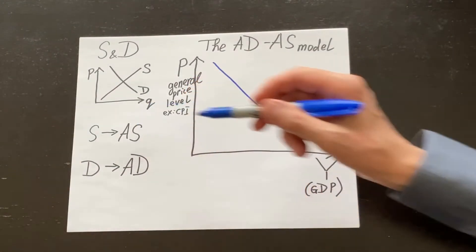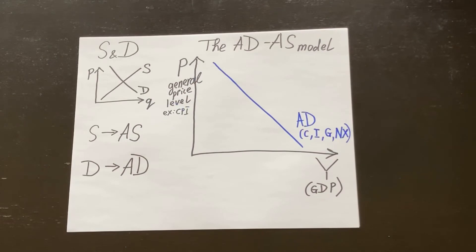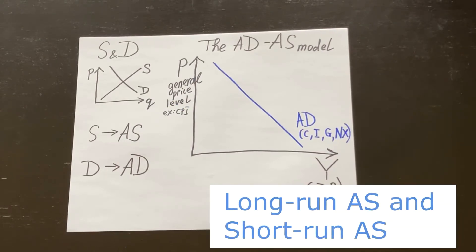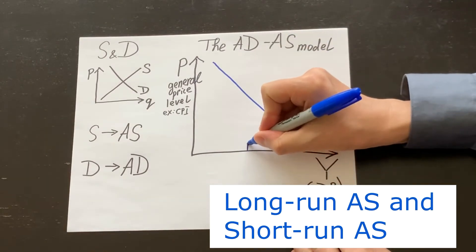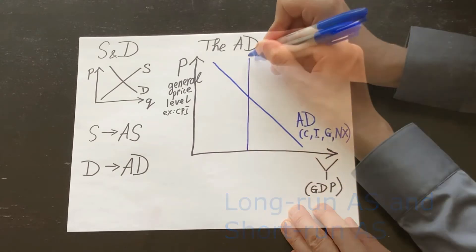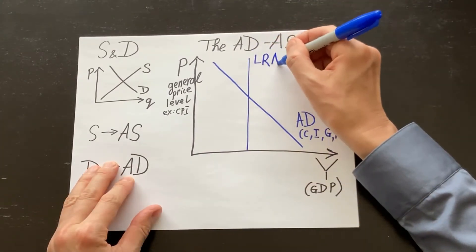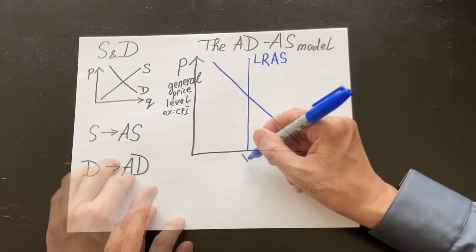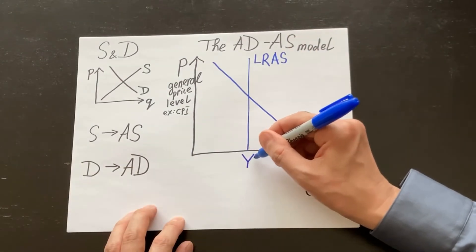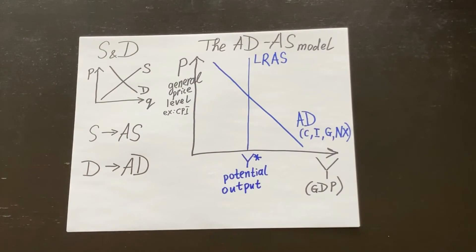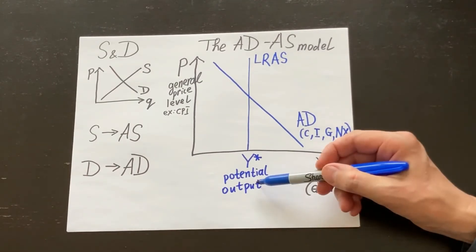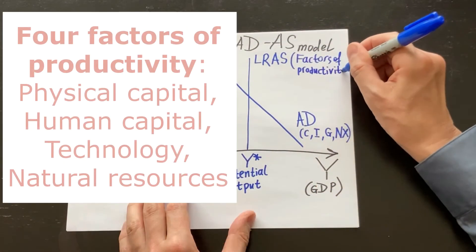Now, aggregate supply. Here we are going to have not one, but two aggregate supply curves. The long-run aggregate supply and the short-run aggregate supply. The long-run aggregate supply is a vertical line. It's vertical because it's fixed at the level of potential output. It's fixed at this level because prices don't affect the long-run GDP. And what's behind the long-run aggregate supply? The four factors of productivity.